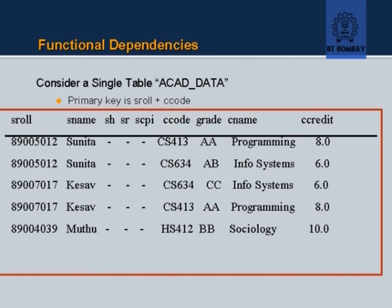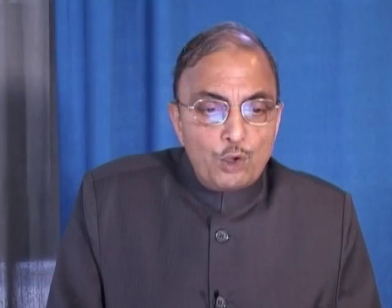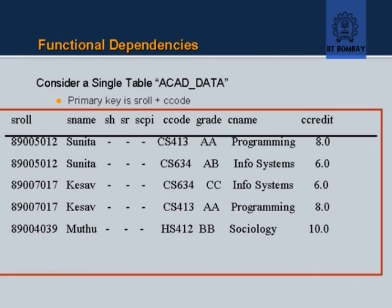Credit, C-name, etc. are dependent only on C-code. S-hostel, S-room, S-name, and S-CPI are fully functionally dependent only on S-roll. So this table is not in the second normal form. The question is: what is the impact of the table not being in second normal form?